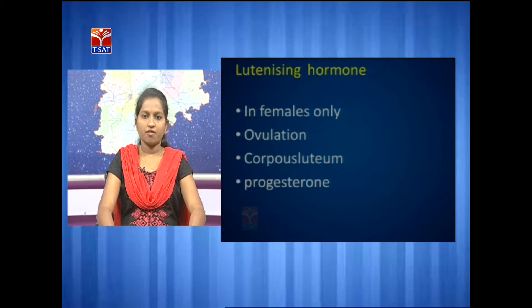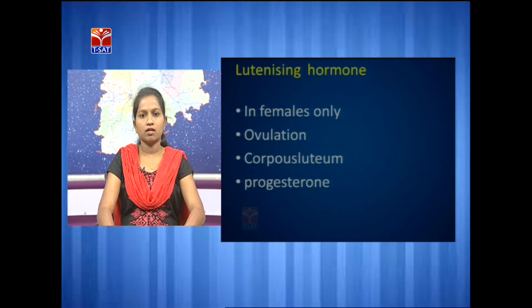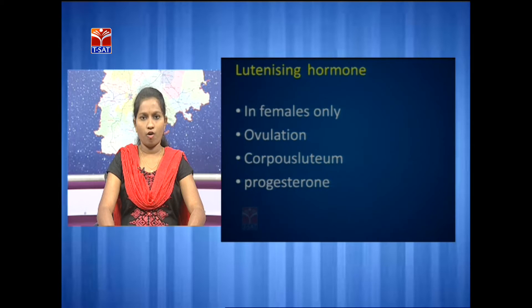The next hormone is luteinizing hormone. The function of luteinizing hormone is seen in the case of females only; in the case of males it is unknown. It stimulates ovulation, stimulates and maintains the corpus luteum, and helps in the secretion of the hormone progesterone.